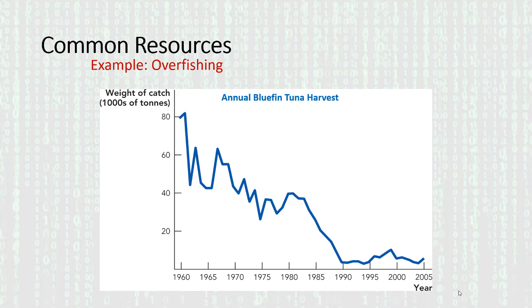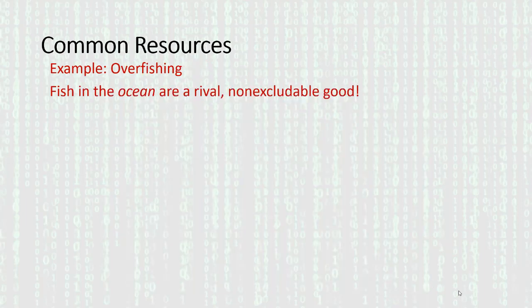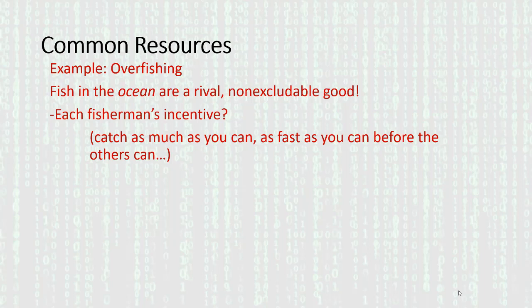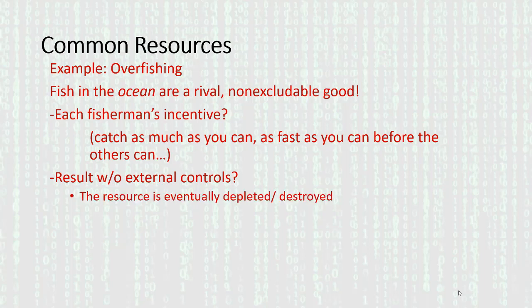That's what happened, for example, with bluefin tuna — the catch declined precipitously over time due to the peril of overfishing. Fish in the ocean are a rival but non-excludable good. Each fisherman has an incentive to catch as much as possible before anyone else gets to those resources. With no external controls, that resource can potentially be depleted and, in some cases, absolutely destroyed — it can go extinct in the case of fish.